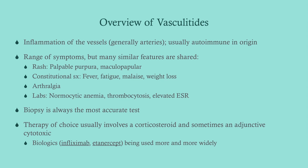The rash will be palpable purpura or maculopapular; they may have little nodules. They'll have constitutional symptoms: fever, fatigue, malaise, weight loss, myalgias, and arthralgias. If you get labs, you'll see typical signs of inflammation — normocytic anemia, thrombocytosis (remember, platelets are an acute phase reactant), and an elevated ESR.